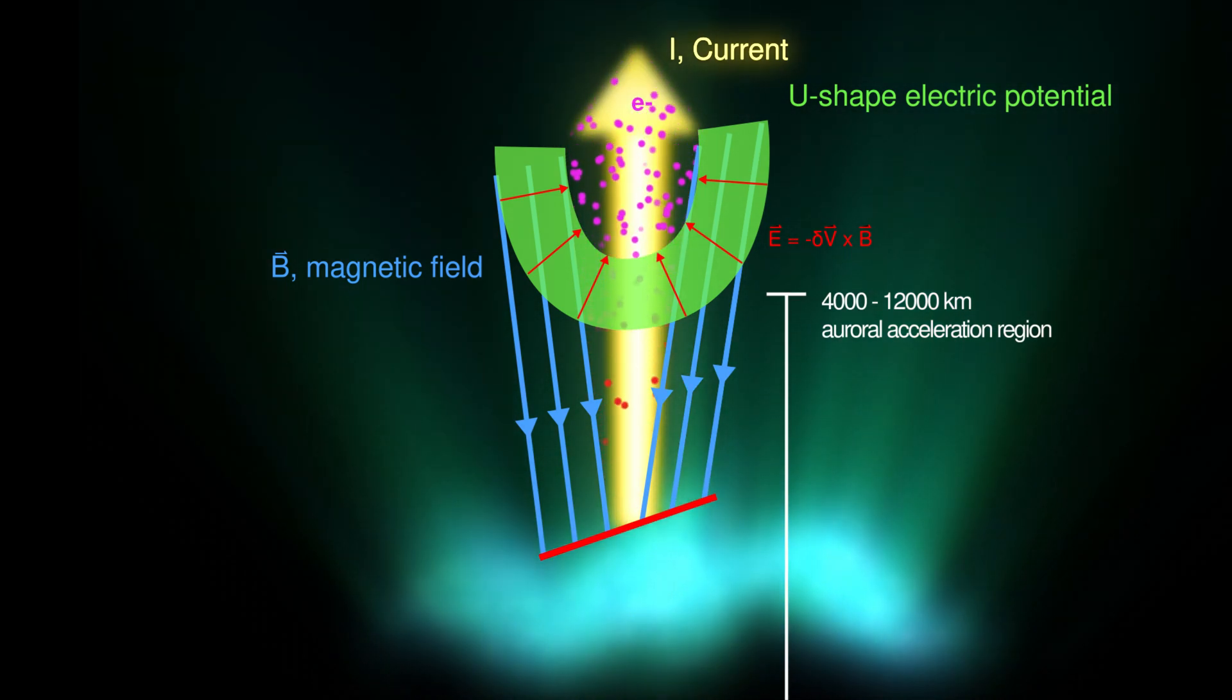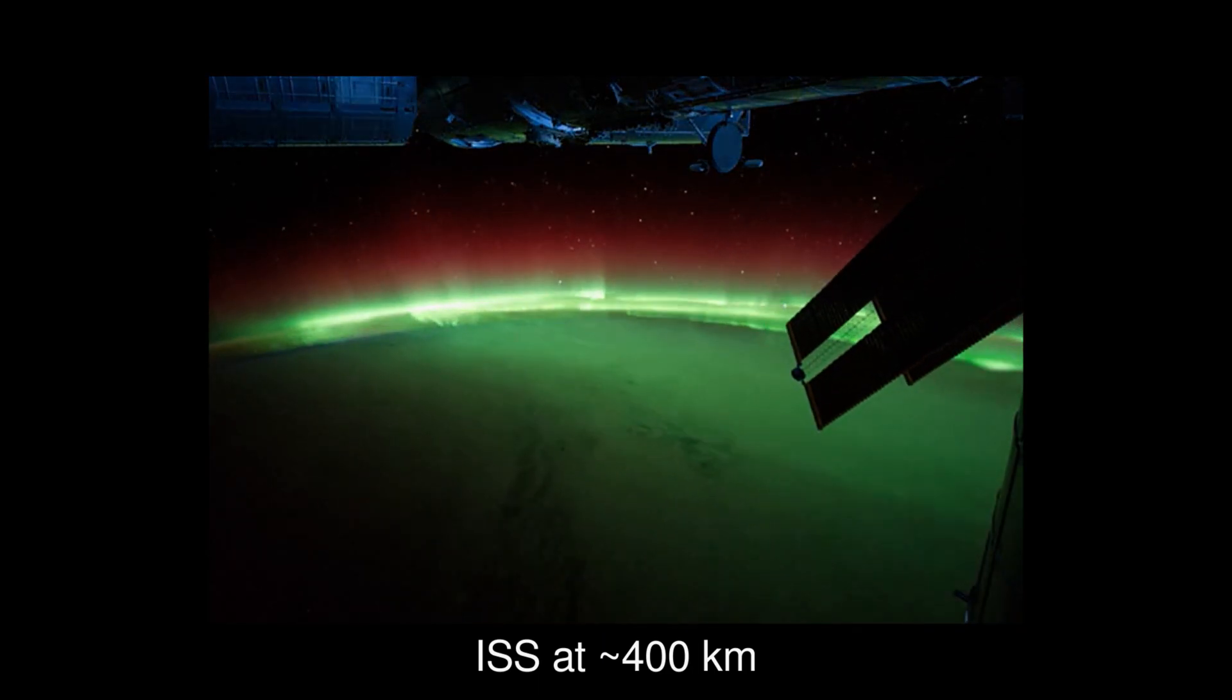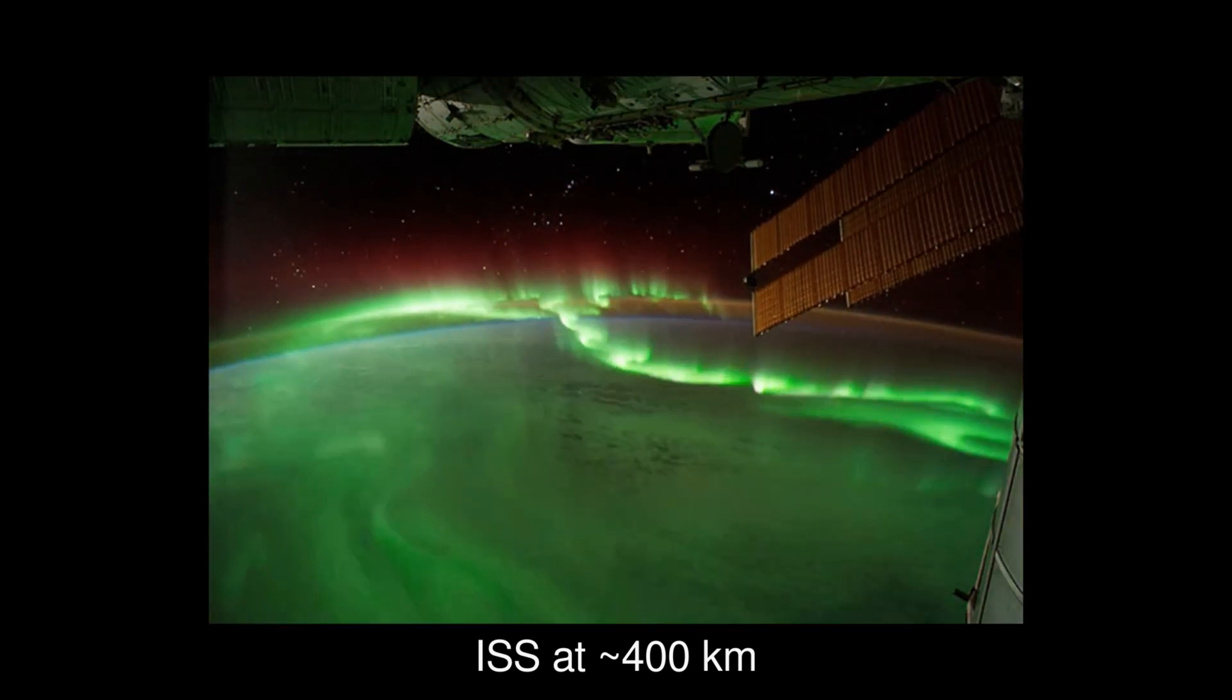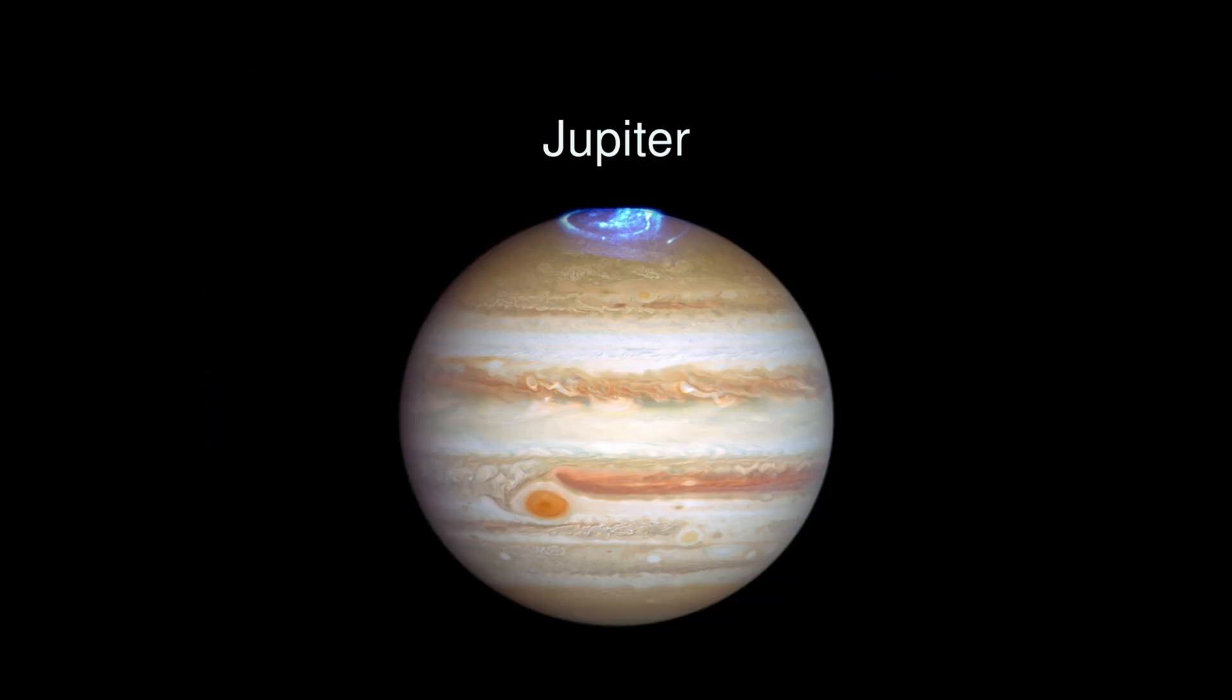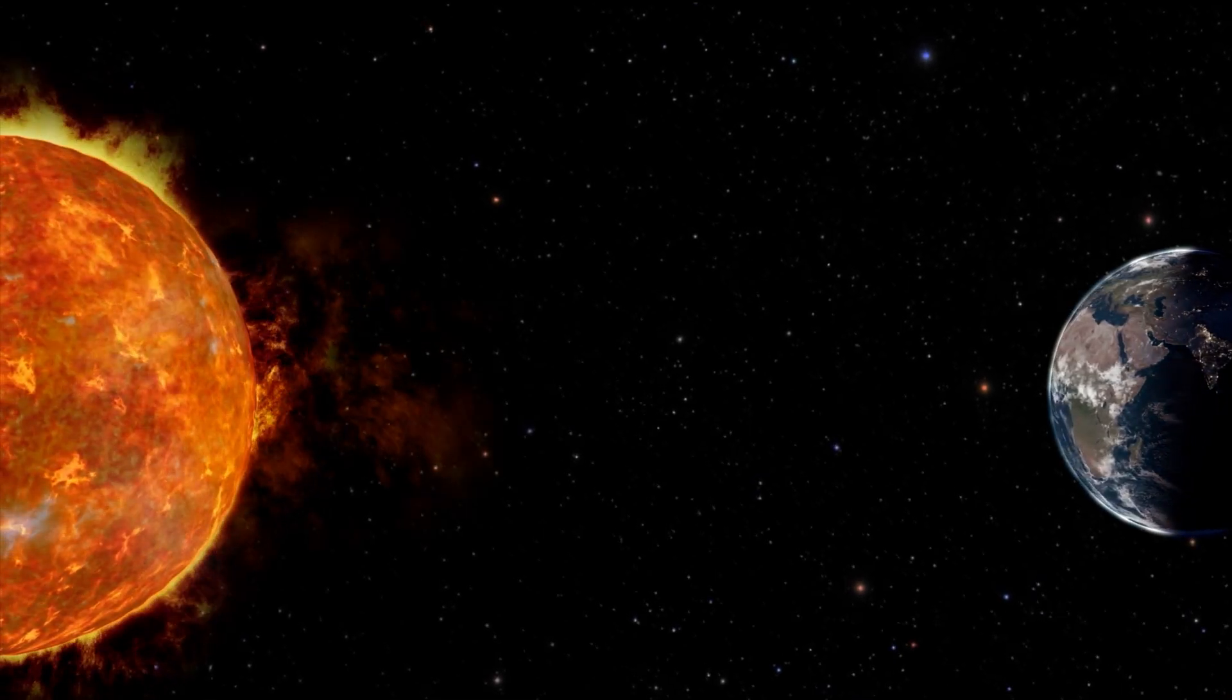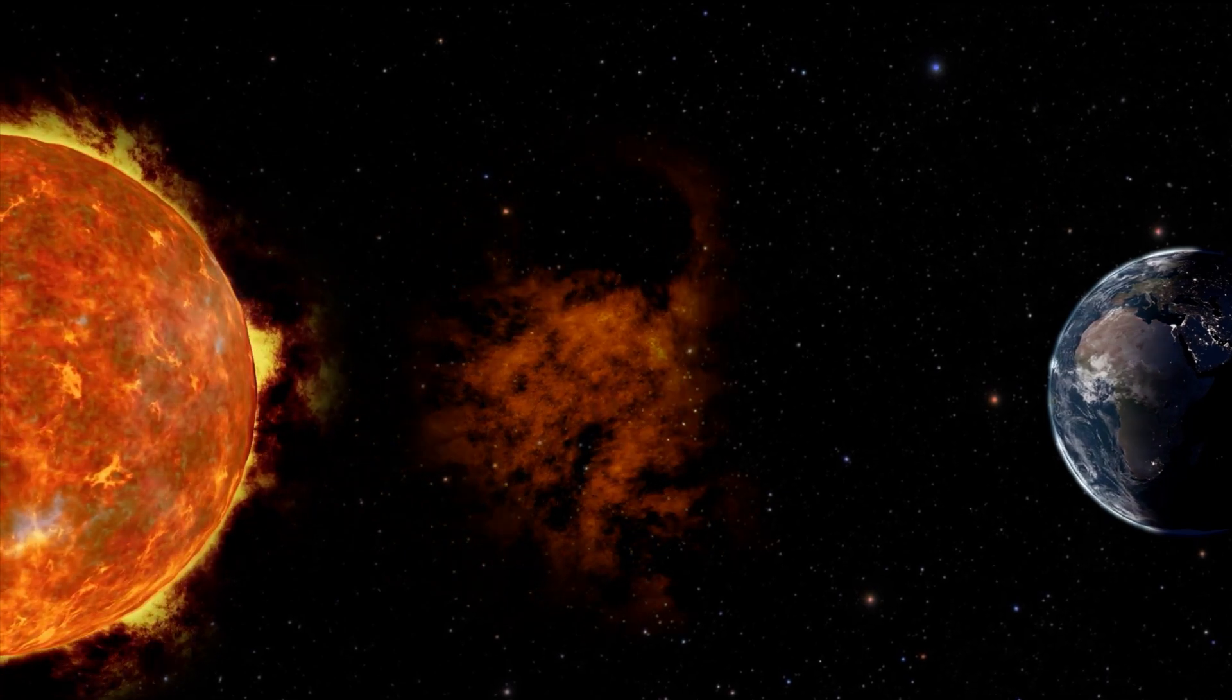These are the basics of how the auroral zone develops. There are still lots of beautiful unknowns regarding aurorae that scientists are actively trying to resolve. What we learned from Earth may also carry over to explain lights that shine on other planets, such as Jupiter, Saturn, and exoplanets. Thank you.